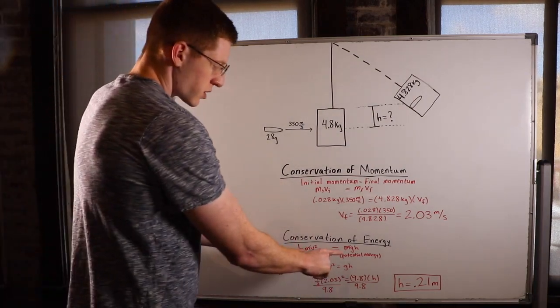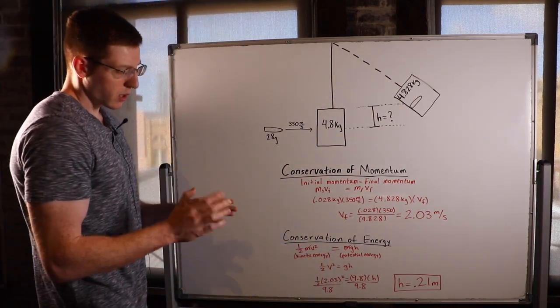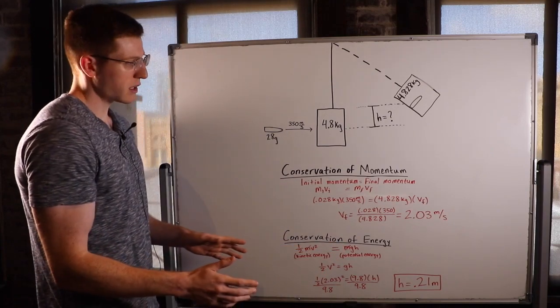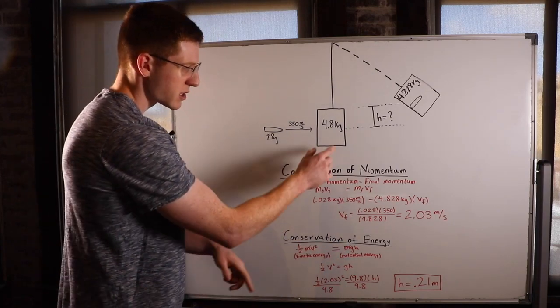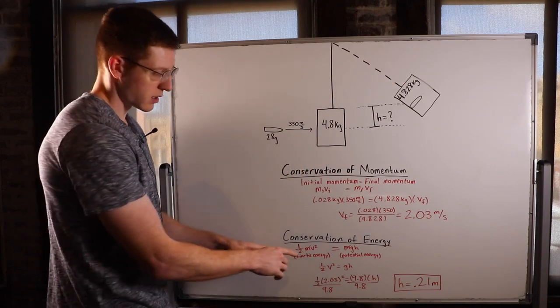So whenever something appears on both sides of an equal sign, you can always disregard it. So I'll cross out the mass here, so I really don't even have to use the mass of the bullet block combination in this equation.